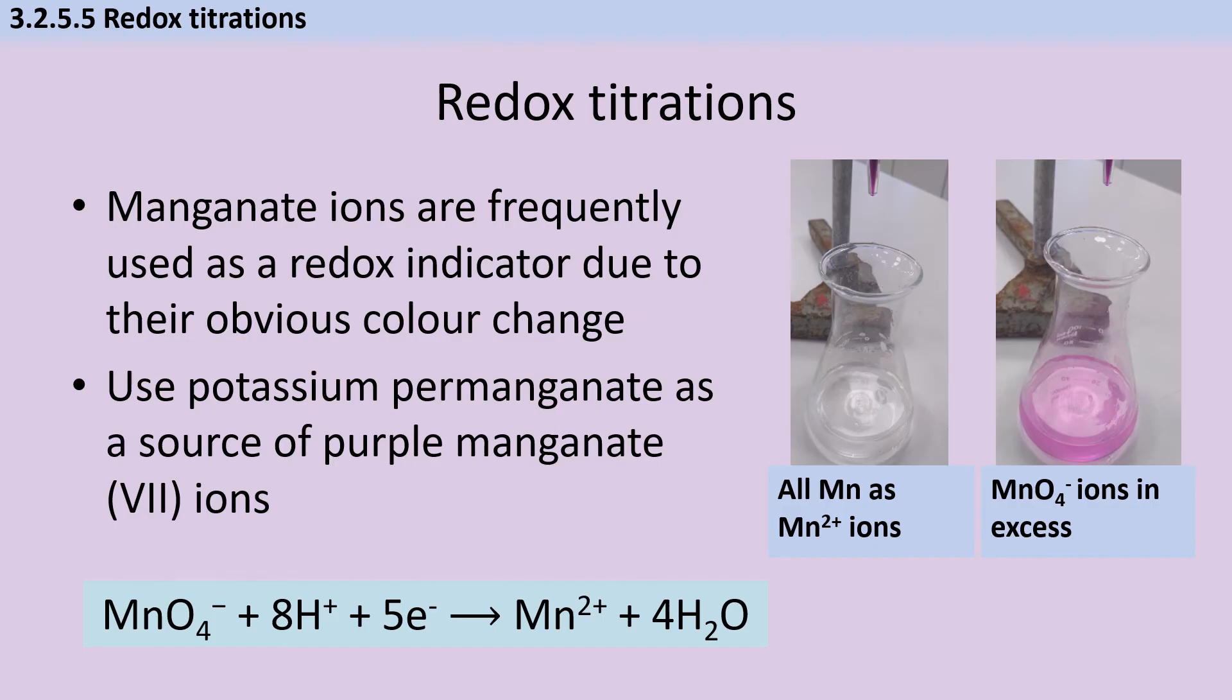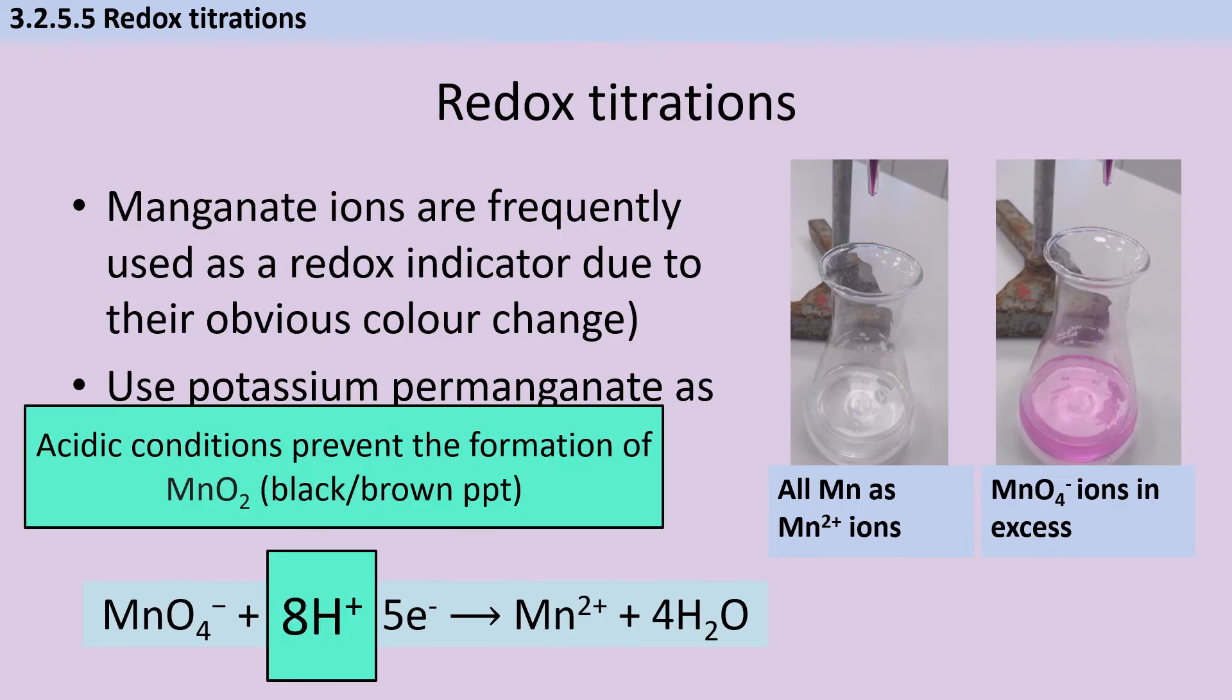Manganate ions are frequently used as a redox indicator because potassium permanganate is this really vibrant purple color, but as the manganese is reduced from +7 to +2 it becomes colorless. For this reaction to proceed as it should, potassium permanganate needs to be acidified using sulfuric acid. Without acidified conditions, the reaction won't proceed properly and we may form manganese dioxide, a black or dark brown precipitate. The choice of acid is also important. A weak acid doesn't provide sufficient hydrogen ions. Hydrochloric acid contains chloride ions which are oxidized by the manganate ions, meaning we'd add too much manganate. Likewise, nitric acid is itself a good oxidizing agent, so if we use that we end up adding too little manganate.